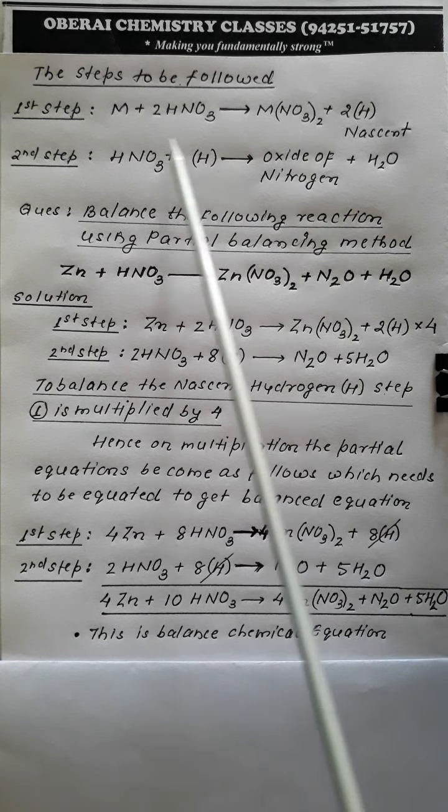Now these partial steps need to be balanced. In the first step, one atom of zinc reacts with two molecules of nitric acid to produce one molecule of zinc nitrate and two nascent hydrogen. In the second step, to produce nitrous oxide and water, we react HNO3 with nascent hydrogen. Balancing nitrogen: nitrogen on the product side is two, and on the reactant side is one in HNO3, so we put a coefficient of two in front of HNO3.